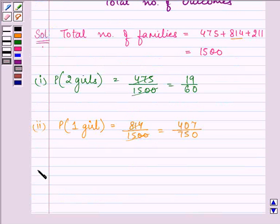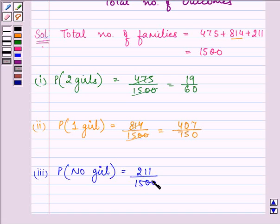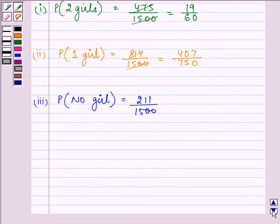And lastly, we need to find out the probability that the family doesn't have any girl. So there are 211 families like that out of the 1500, and they do not have any common factor, so the answer will remain the same.